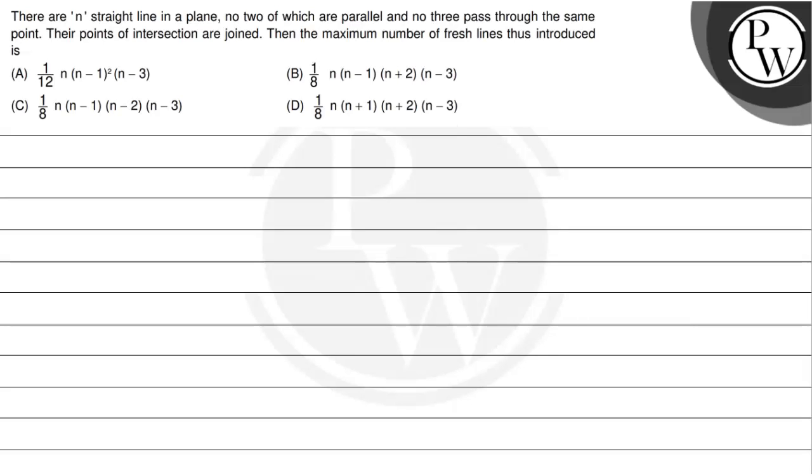Hello Bacho, let us read this question. The question says there are n straight lines in a plane, no two of which are parallel and no three pass through the same point. These points of intersection are joined. Then the maximum number of fresh lines thus introduced is.